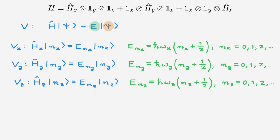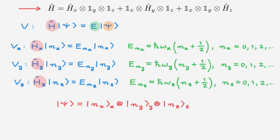From the video on eigenvalues and eigenstates of tensor product state spaces, we know that, given the form of the Hamiltonian, we can build the eigenvalues and eigenstates of H from those of Hx, Hy and Hz. In particular, the eigenstate psi is given by the tensor product of the eigenstates nx, ny and nz, and the eigenvalue E is given by the sum of the eigenvalues Ex, Ey and Ez. We've solved the eigenvalue equation of the three-dimensional quantum harmonic oscillator simply by using our knowledge of the one-dimensional solution.